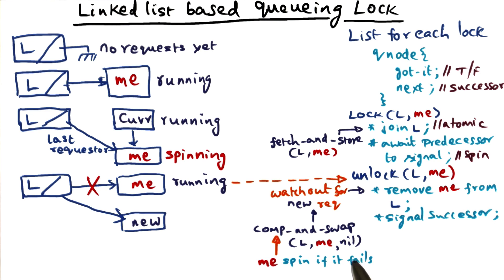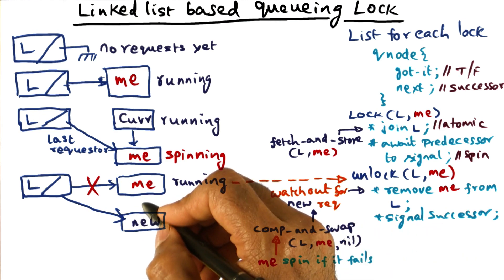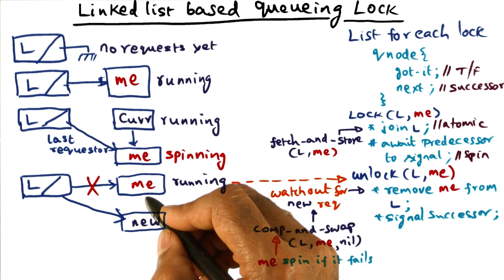Now what am I spinning on? When will it become not nil? So basically what I'm going to do is, I'm going to spin on my next pointer being not nil. So right now it's nil.